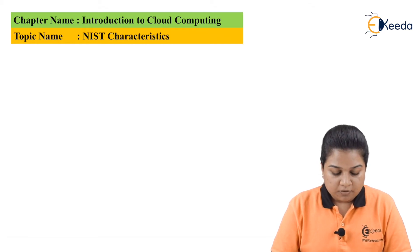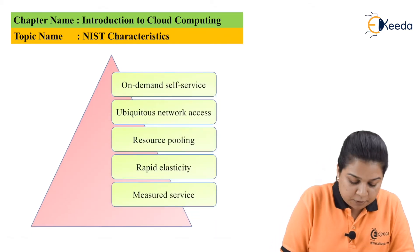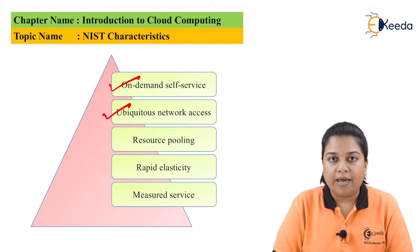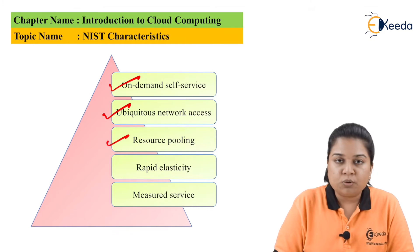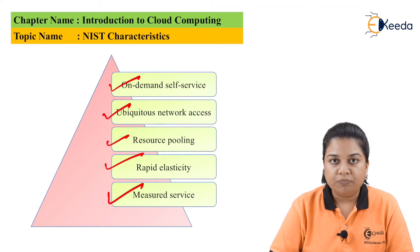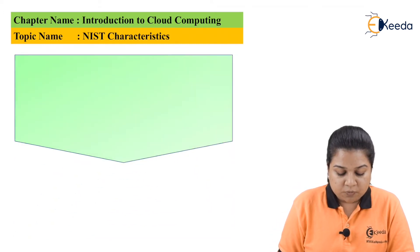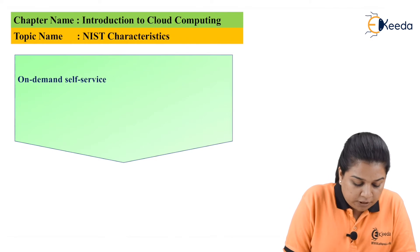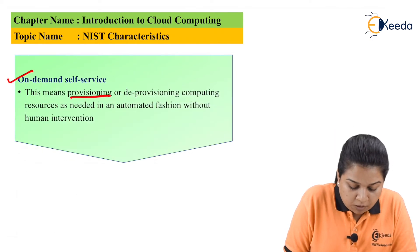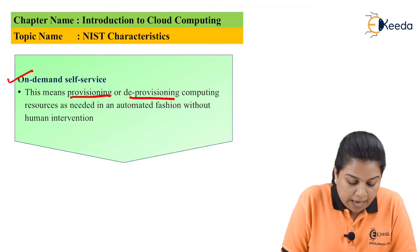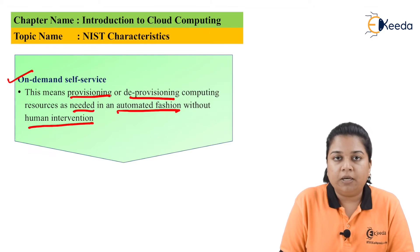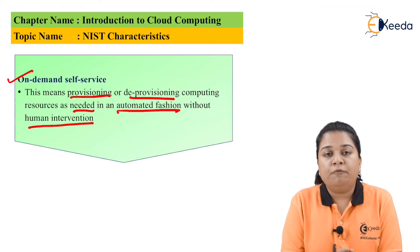The five characteristics are: first, on-demand self-service; second, ubiquitous network access; third, resource pooling; fourth, rapid elasticity; and fifth, measured services. The first one is on-demand self-service. It is the provisioning or de-provisioning of computing resources as needed in an automated fashion without human intervention.